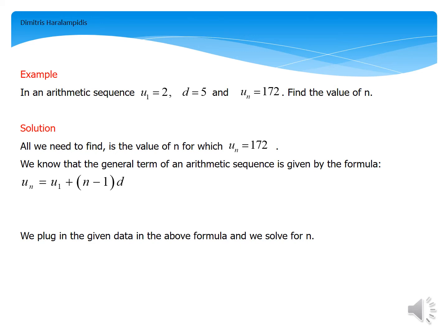All we need to find is the value of n for which un equals 172. We already know by theory that the general term of an arithmetic sequence is given by the formula: un equals u1 plus (n-1) times d.